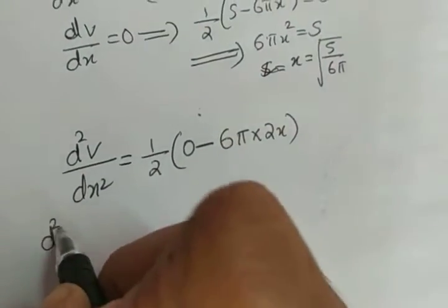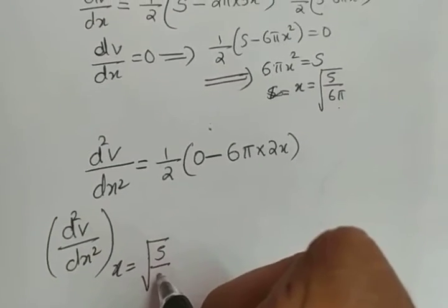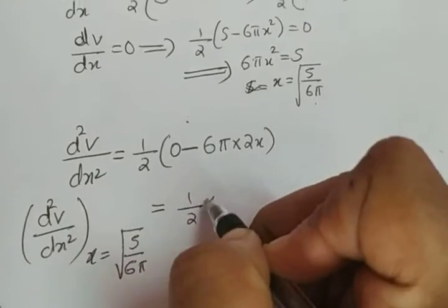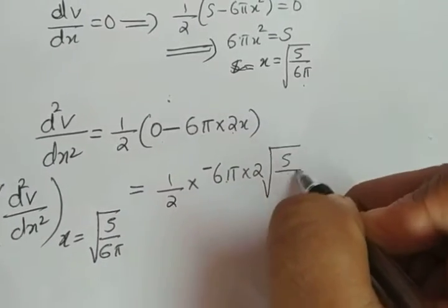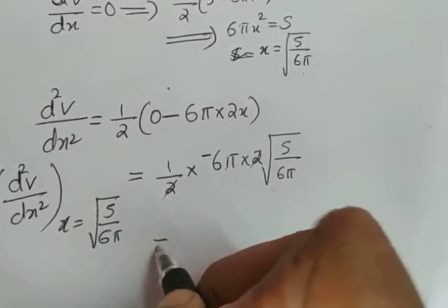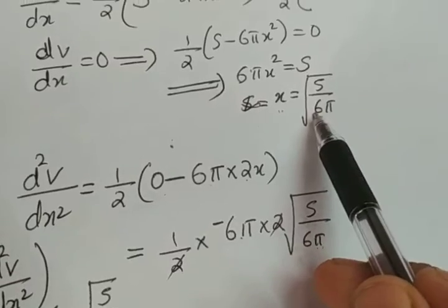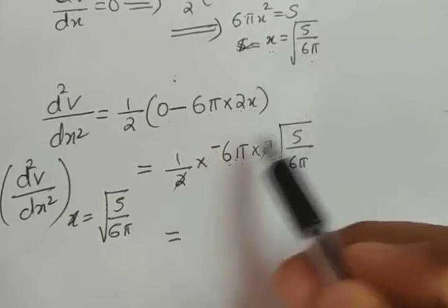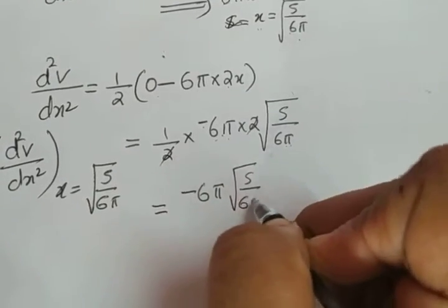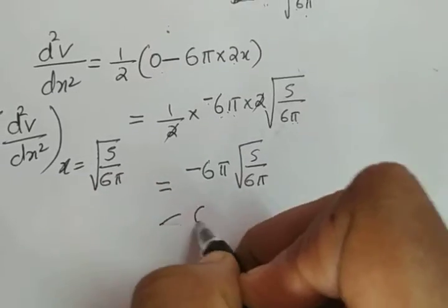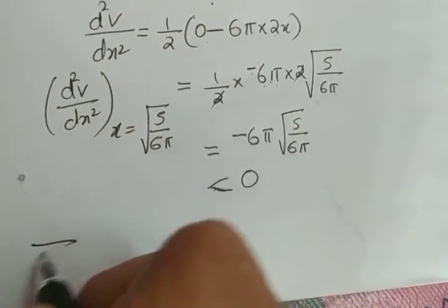Evaluating d²v/dx² at x = √(s/6π): we get (1/2)(−6π · 2 · √(s/6π)). Since x is the radius it must be positive, π is positive, and 6 is positive, but there is a negative sign, so the whole expression is less than 0, which implies v is maximum at x = √(s/6π).